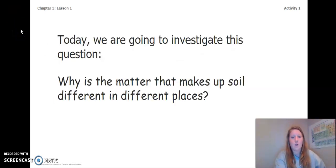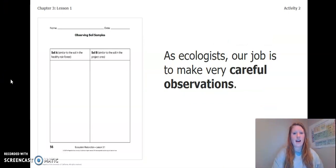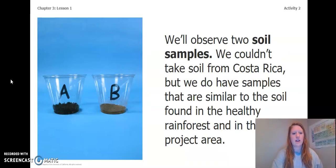Today, during lesson one, we are going to investigate this question: why is the matter that makes up soil different in different places? We'll observe two soil samples. We couldn't take soil from Costa Rica, but we do have samples similar to the soil found in the healthy rainforest and in the project area. As ecologists, our job is to make very careful observations. You are going to use this table to make your observations — you can find it in your activity packet. Let's go back and look at this image. What do you notice about soil A and soil B? Pause the video to make your observations.